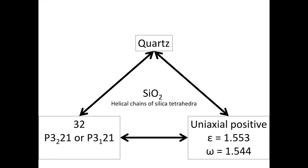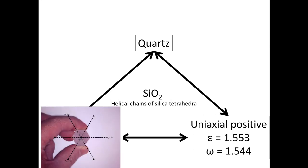Those space groups are P3221 or P3121. Our point group symmetry for quartz is 32, and here's an example of a quartz crystal oriented by that point group symmetry. The chemistry and structure of our quartz also give rise to our optical properties. Quartz is uniaxial positive, with refractive index epsilon being 1.553 and refractive index omega being 1.544.